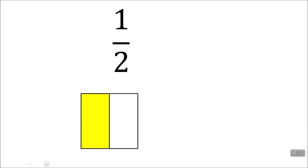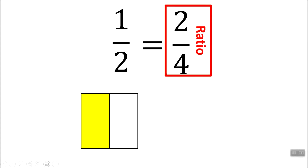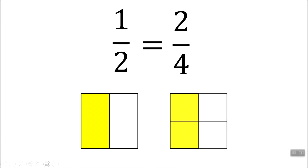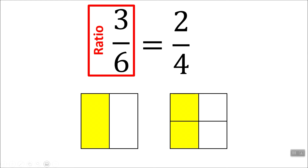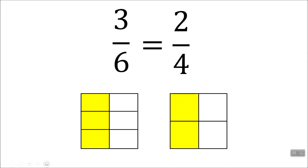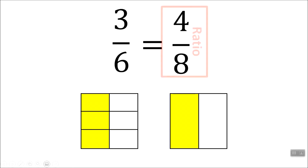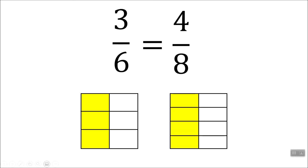So you got your one half — that's a ratio. You got your two fourths — that's a ratio. You got your three sixths — that's also a ratio. Now did you know that all those ratios are the same thing?